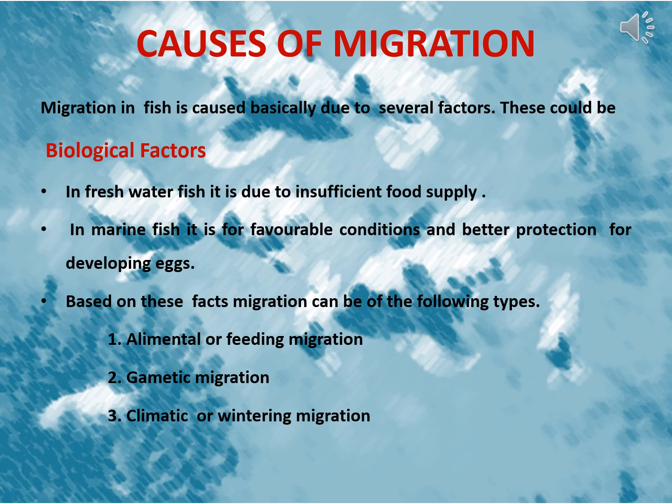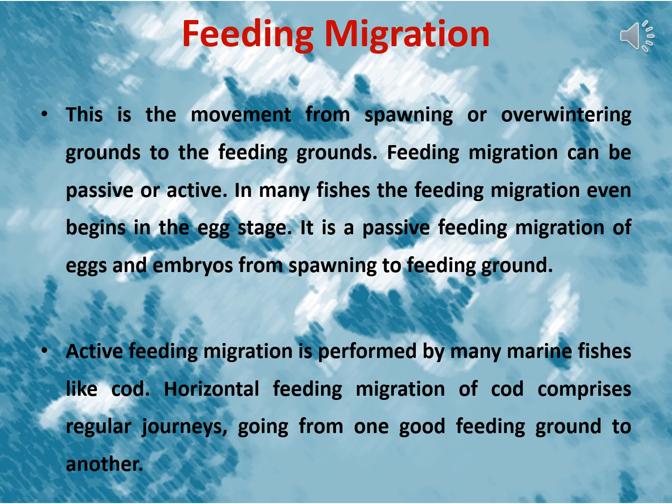Migration in fishes is caused basically due to several factors. One of them could be biological factors. In freshwater fishes, migration is due to insufficient food supply, while in marine fishes it is for favourable conditions and better protection for developing eggs. Based on these facts, migration could be divided into the following types: first, alimentary or feeding migration; another is gametic migration; and then climatic or wintering migration. Feeding migration is defined as the movement from spawning or overwintering grounds to the feeding grounds. Feeding migration can be passive or active. In many fishes, the feeding migration even begins in the egg stage — it is a passive feeding migration of eggs and embryos from spawning to feeding grounds.